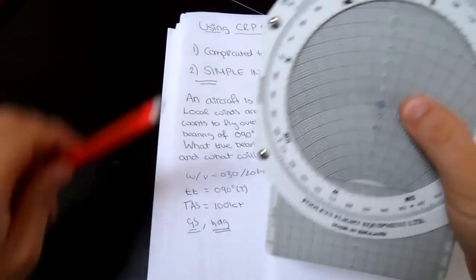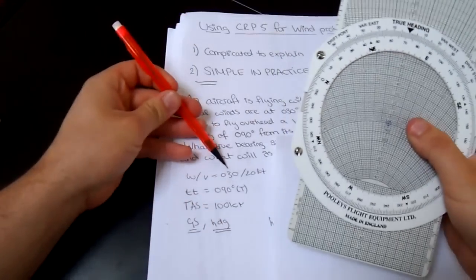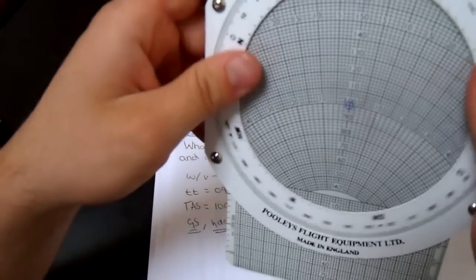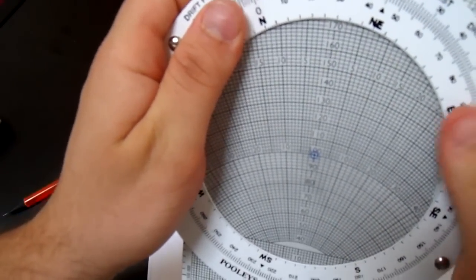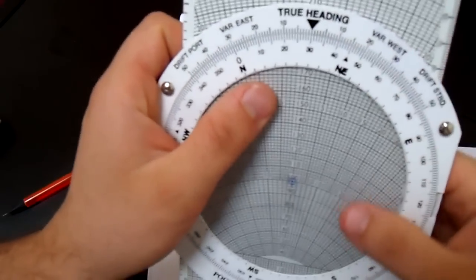And now we're going to line the true heading with the heading of the wind. And so the direction the wind is coming from, so 030 degrees. There you go. Right, now what we're going to do is we're going to take a pencil, and we're going to find 20 knots.